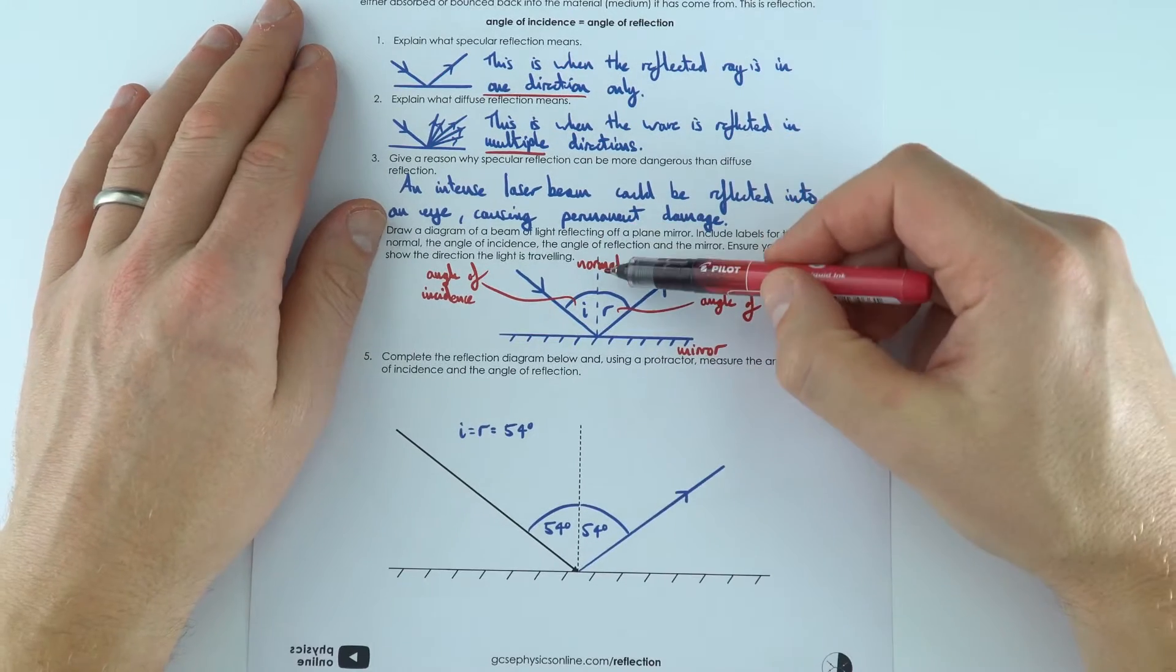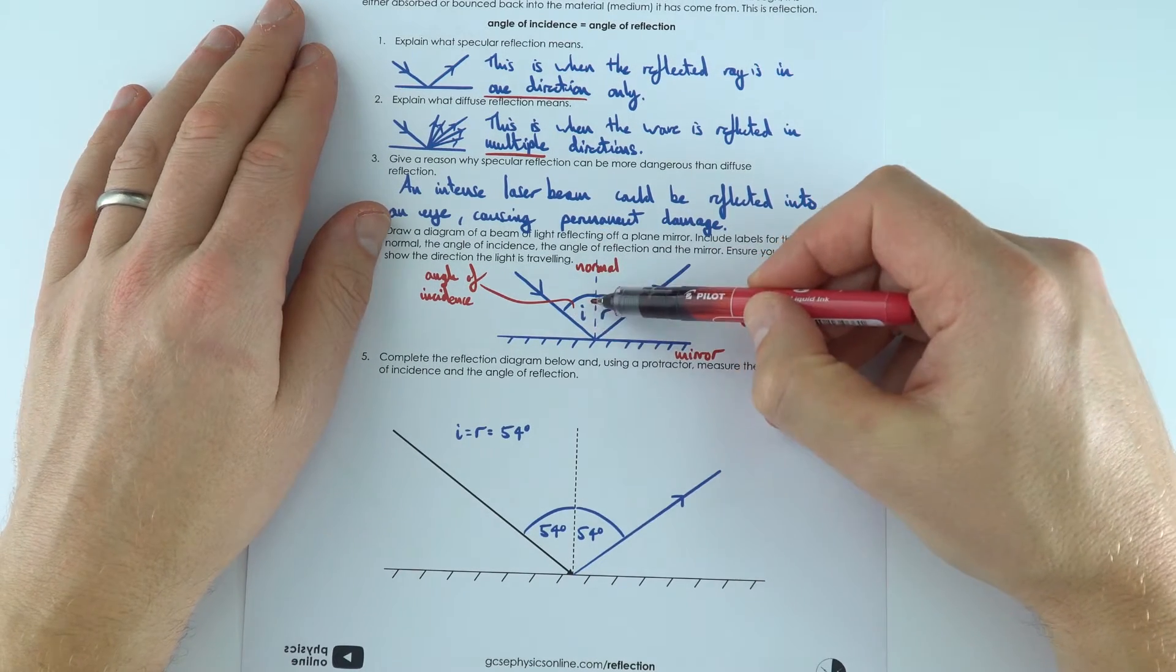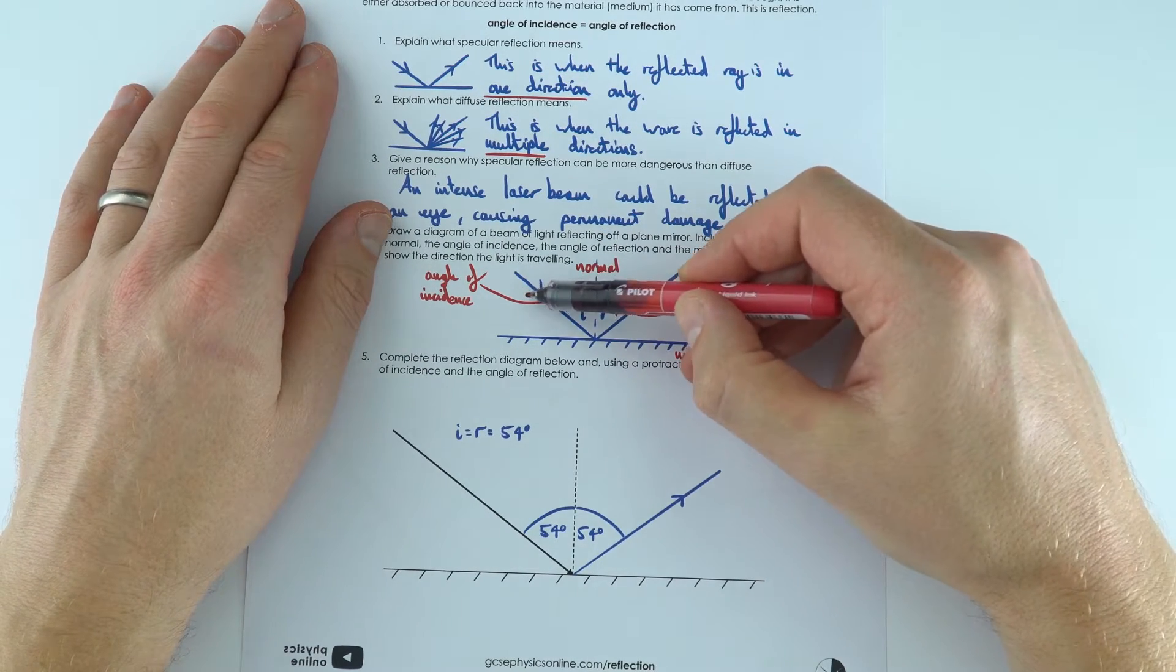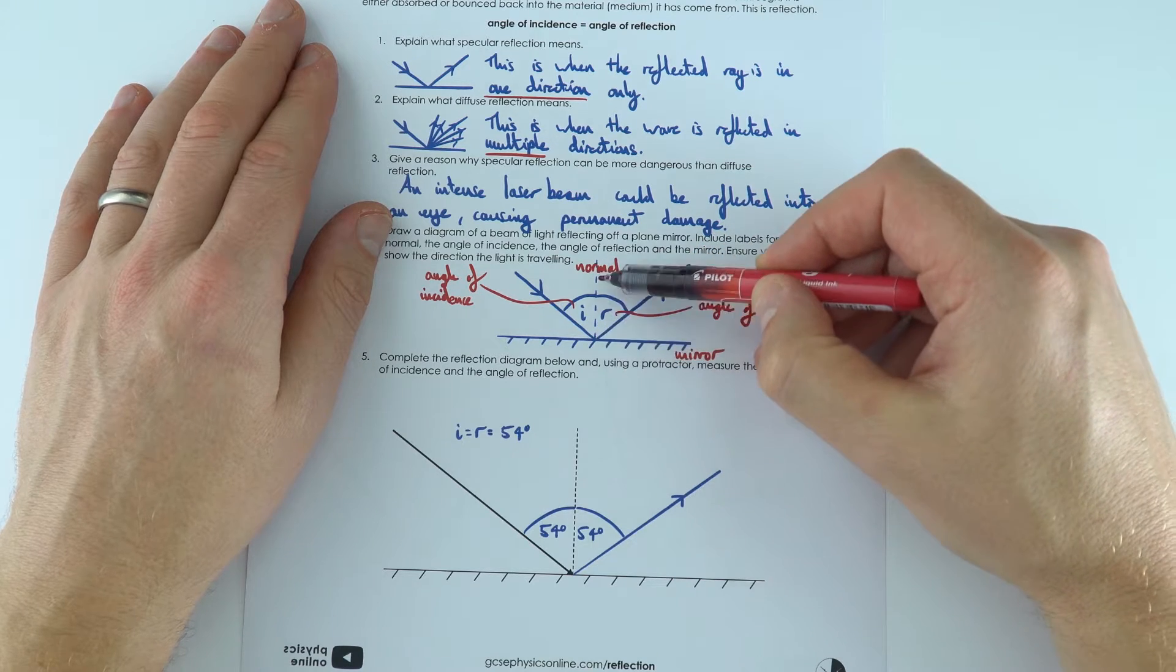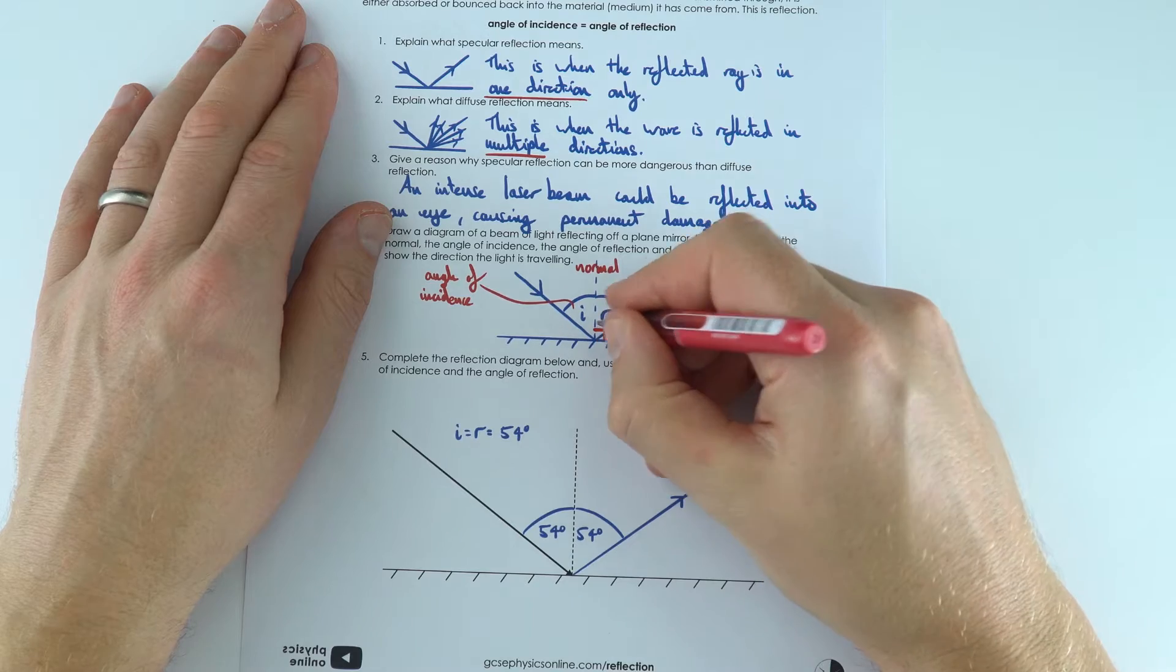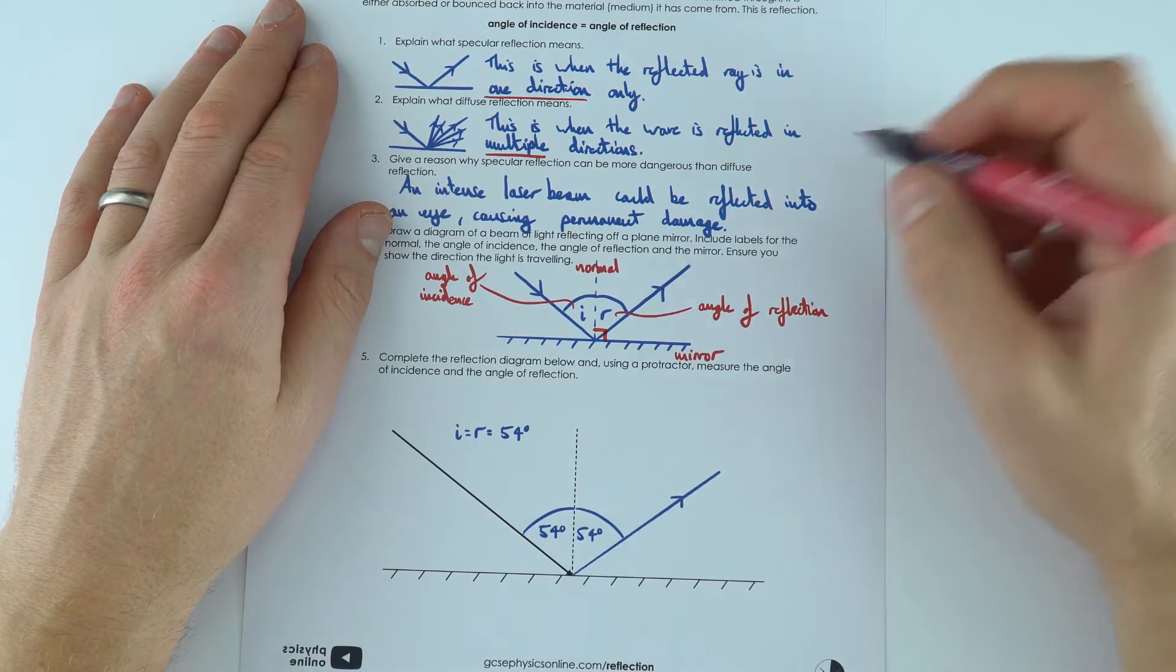So here we've got some of the words that you need to know about. We've got the angle of incidence, which is between the ray of light coming in to the boundary or surface where it's reflected and the normal line. This normal line is at 90 degrees to that surface.